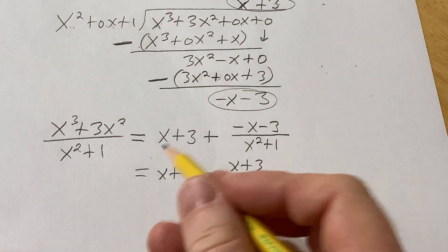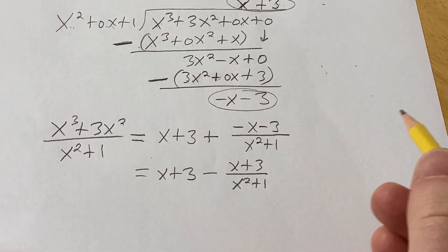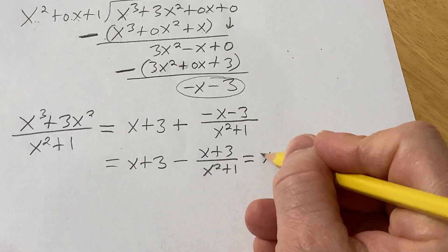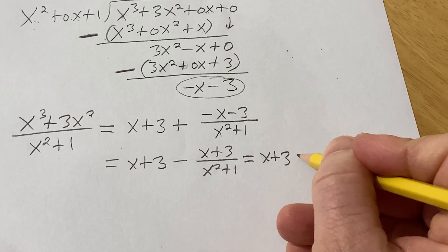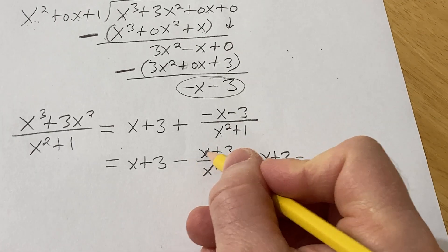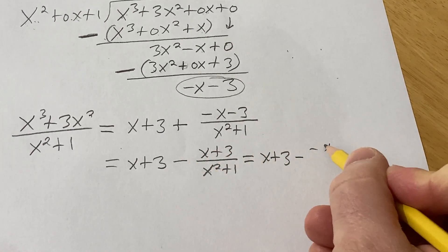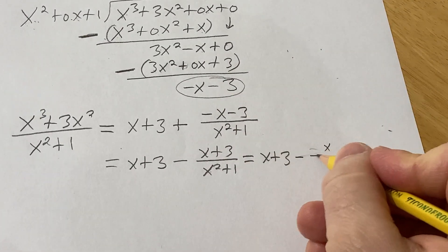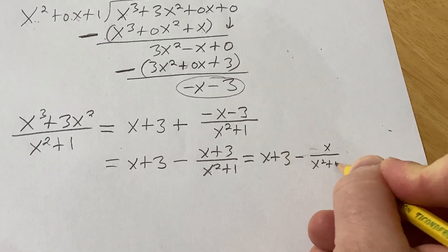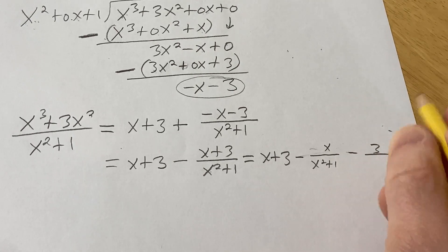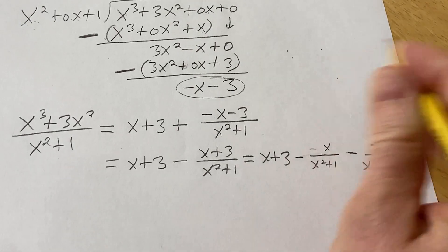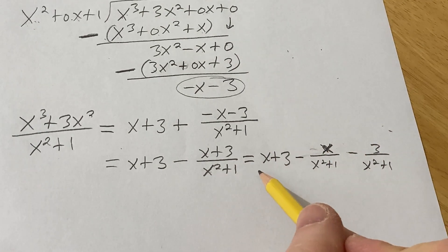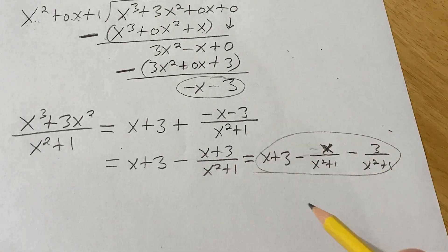And you can take this even a step further and break it up even more, perhaps to make the integration easier. This is going to be x plus 3 minus x over x squared plus 1 minus 3 over x squared plus 1. So now you just basically have to integrate all of this and you're good to go.